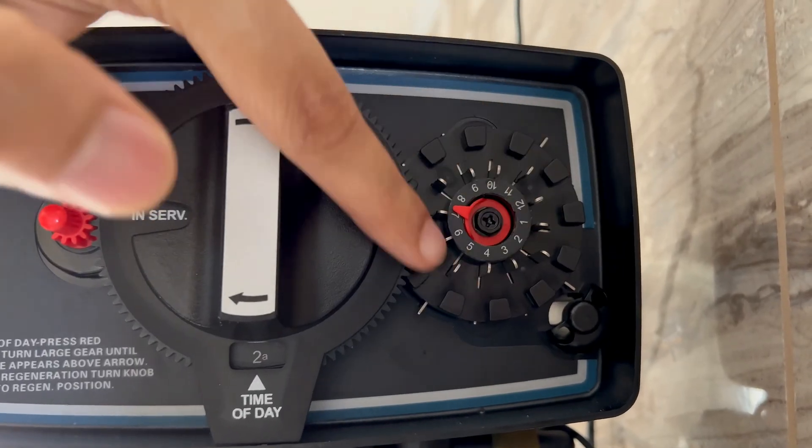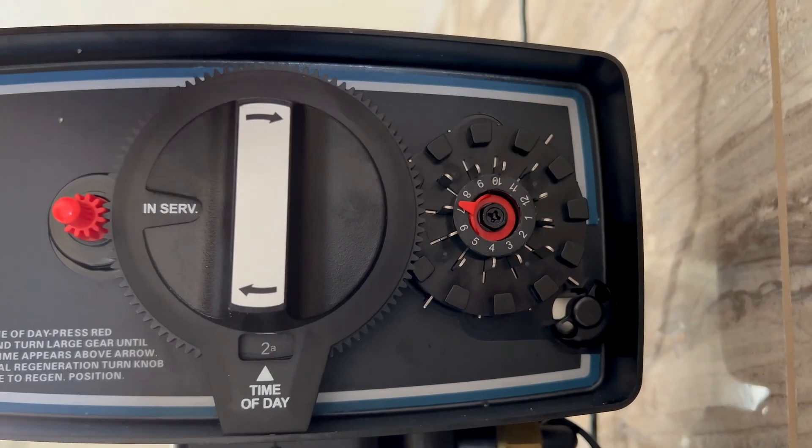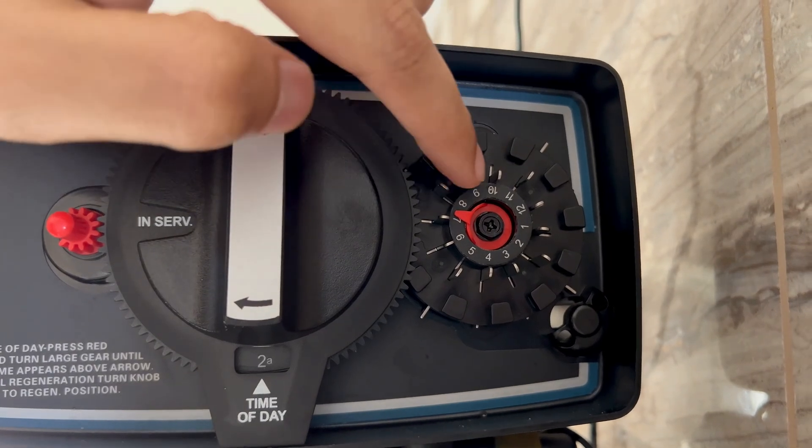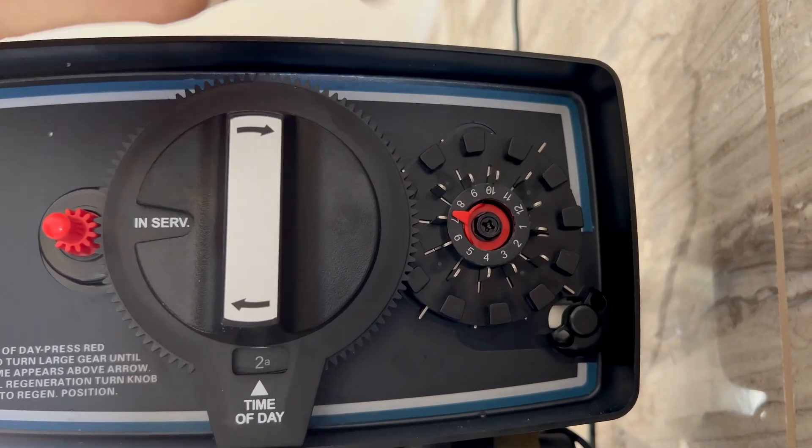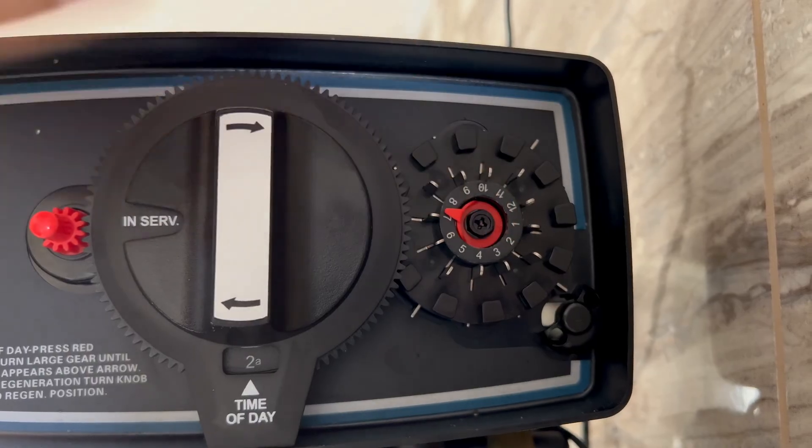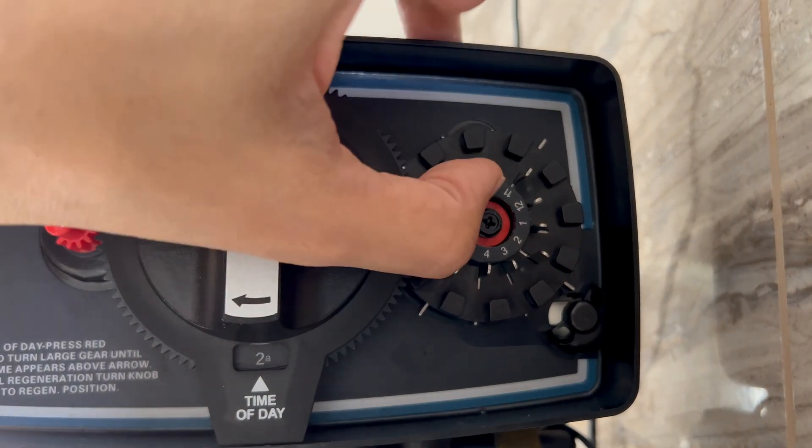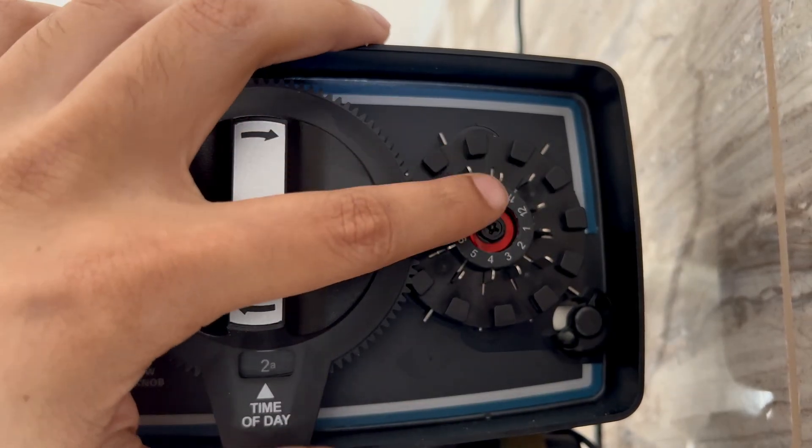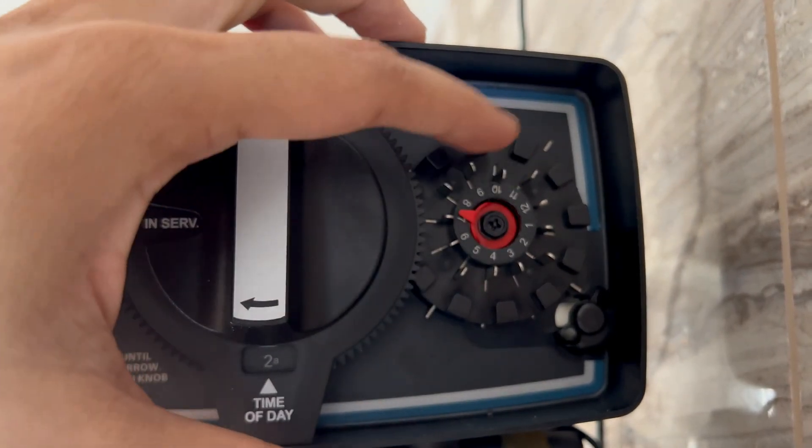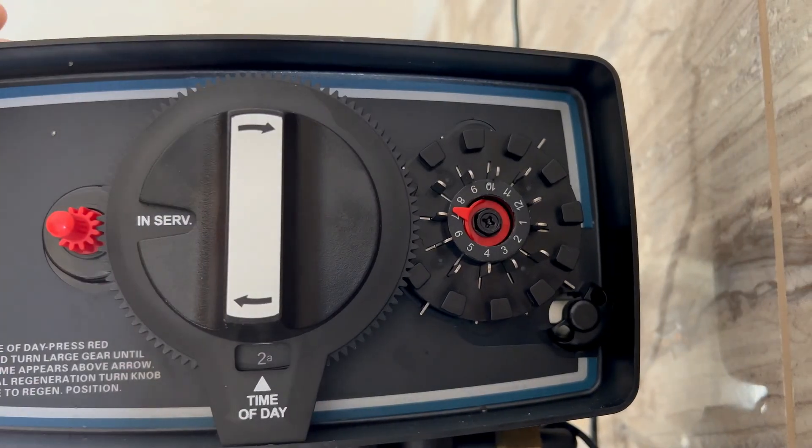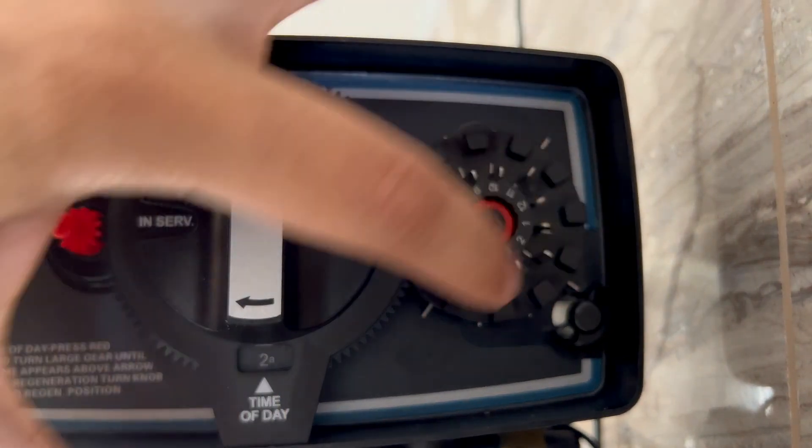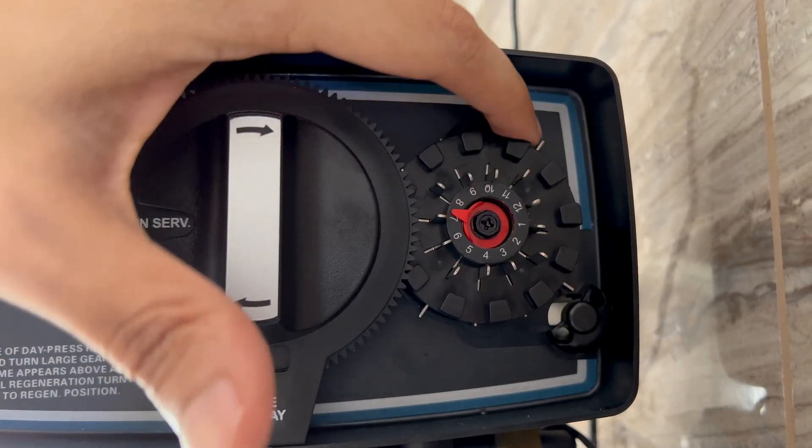On the right hand side you will see 12 individual dials that can be pulled out or pulled back inside. Each dial signifies a day. For example if you want to regenerate the water on the second day like you can see in this machine the second day dial is pulled out. Just for example I've pulled out the number nine dial here and depending on the day the dials are pulled out that's the day when the regeneration happens.